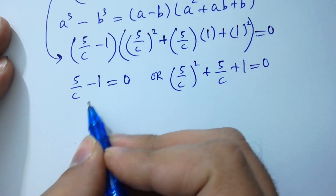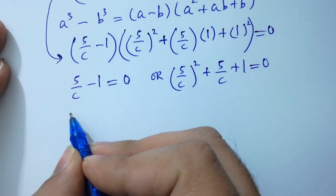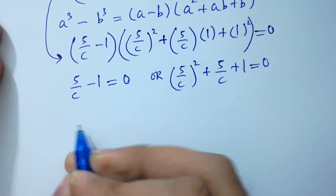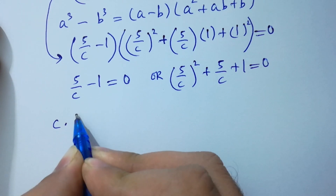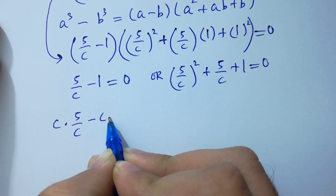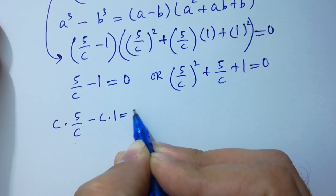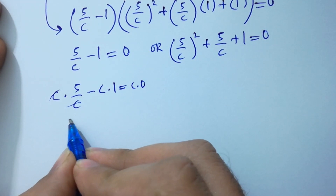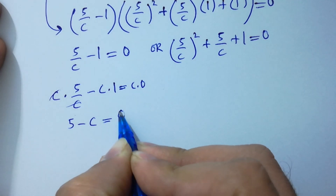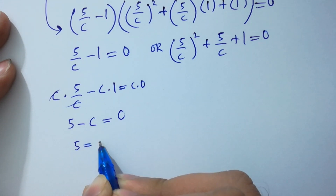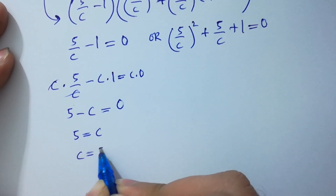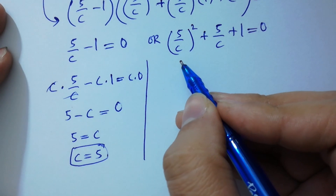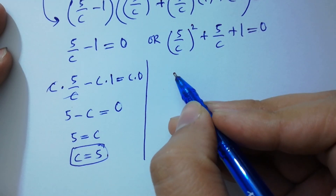If we solve 5/c minus 1 equals 0, multiply by c on both sides to get rid of c: c times 5/c minus c times 1 equals c times 0. So c and c will be cancelled, giving us 5 minus c equals 0, and 0 times c is 0. Therefore 5 equals c, so c equals 5. And here you can see this other factor is like a quadratic equation.